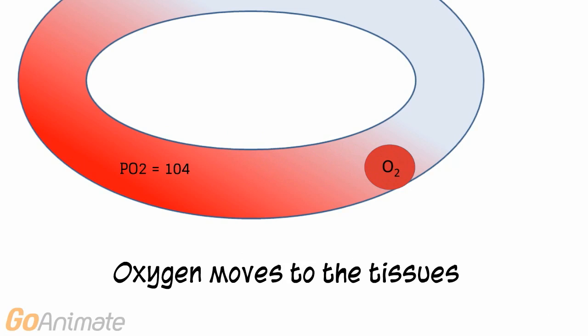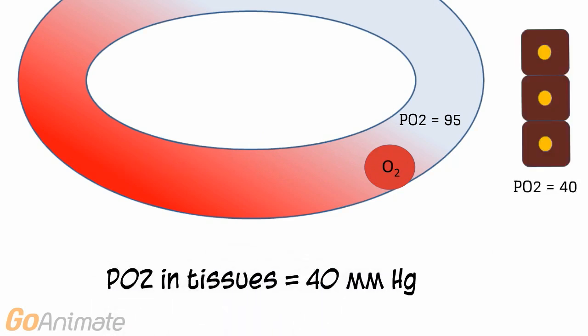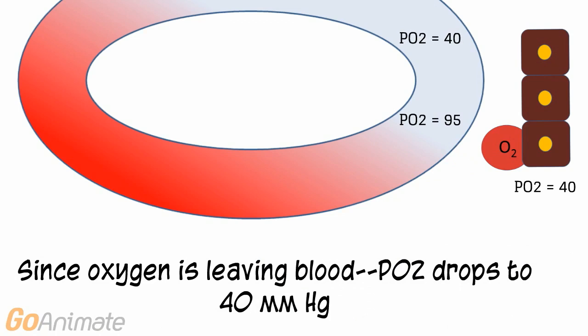Oxygen is then carried to the tissues. Along the way, the oxygenated blood mixes with some deoxygenated blood, causing the PO2 to drop to about 95 mmHg. The tissue PO2 is about 40 mmHg. When the oxygenated blood PO2 of 95 meets the tissue PO2 of 40, the partial pressure gradient allows for the movement of oxygen into the tissue by diffusion. Since oxygen leaves the blood, the PO2 drops to 40 mmHg.